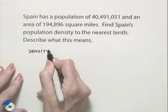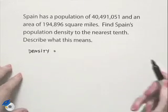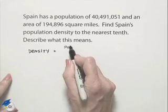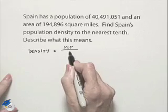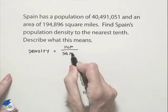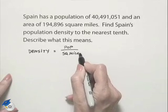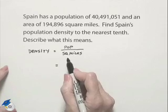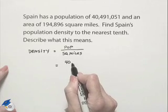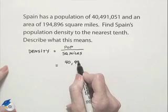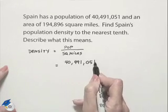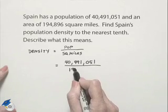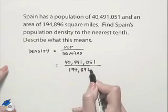We're going to find the density by looking at the following fraction. We're going to have the population divided by the area in square miles. So in this case, we're going to have 40,491,051 divided by 194,896.